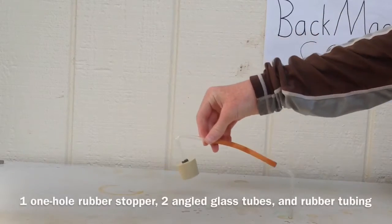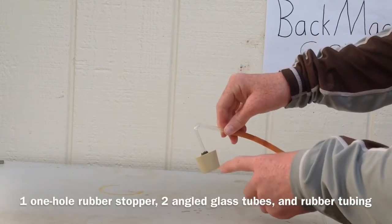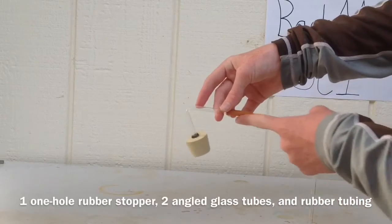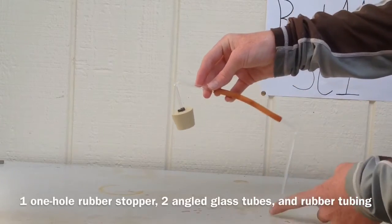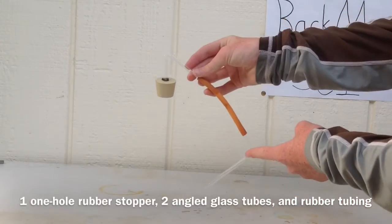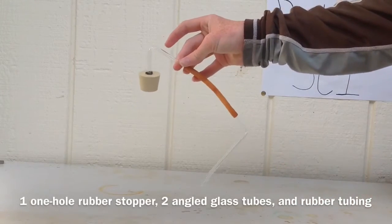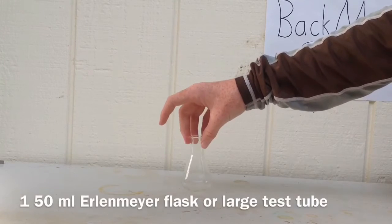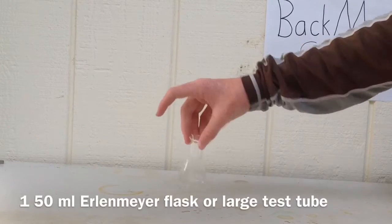You will also need this setup: a rubber stopper for the flask, an angled glass tube, a piece of rubber tubing, and a 90 degree piece of glass tubing to go into the mini flask. This mini flask will be collecting the nitric acid and will be holding the hydrogen peroxide.